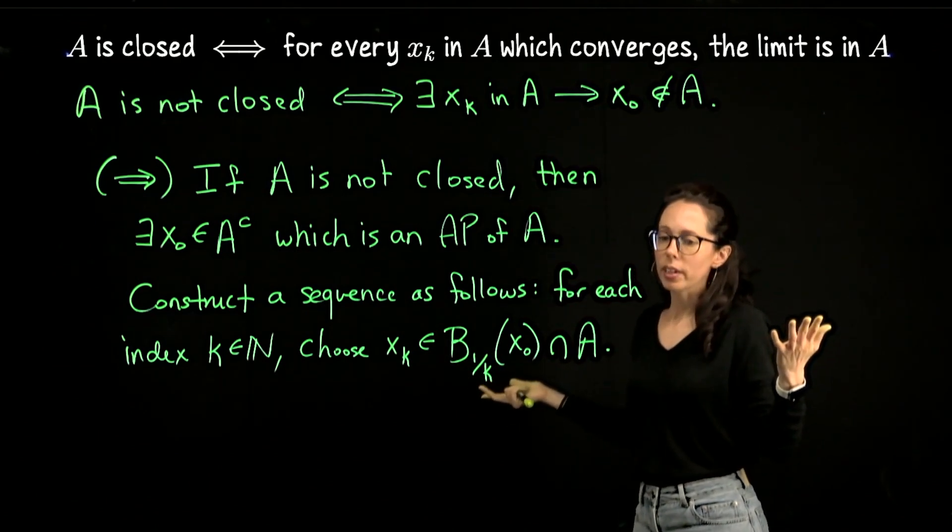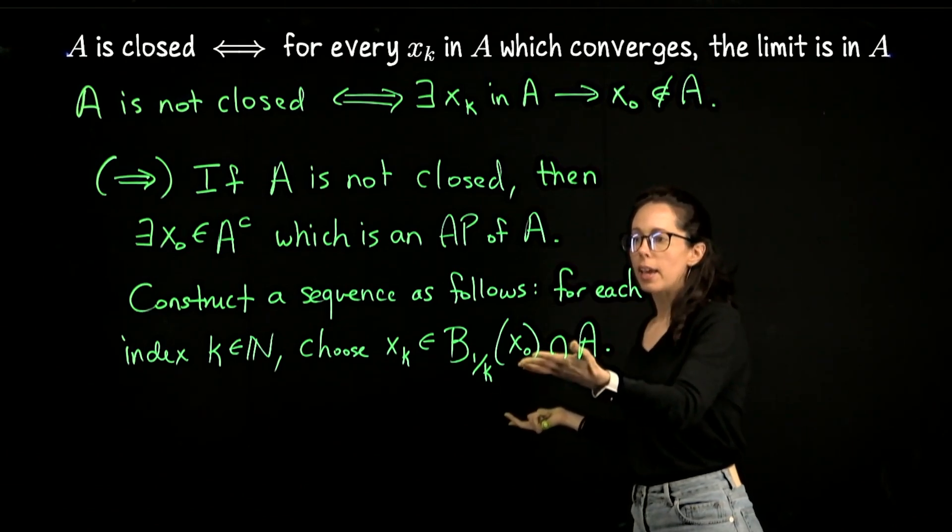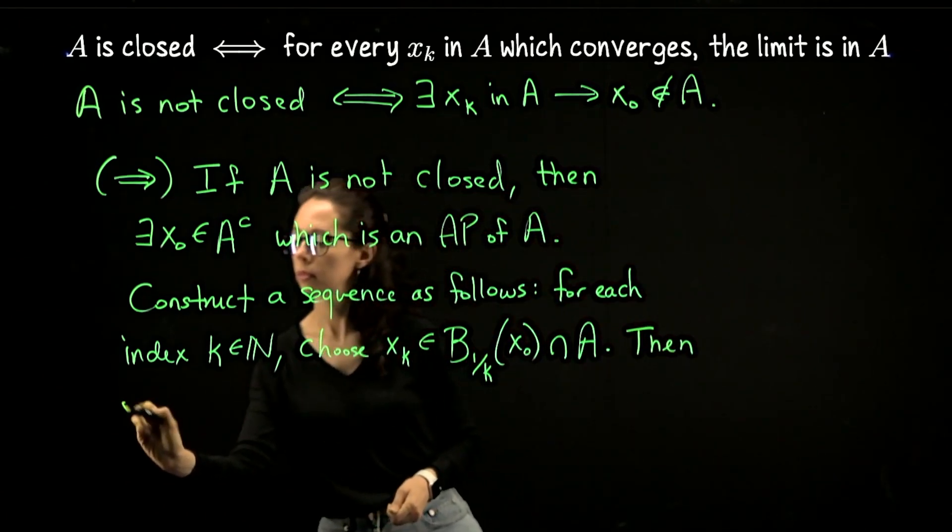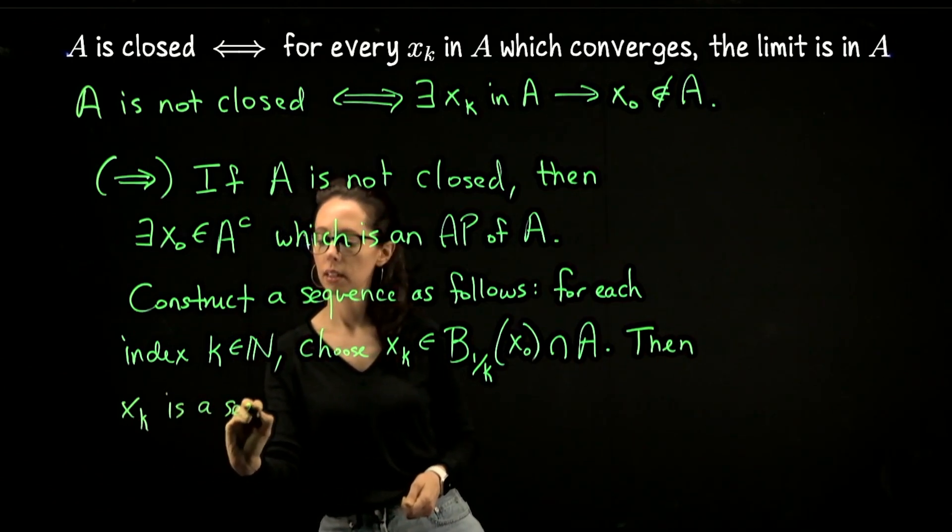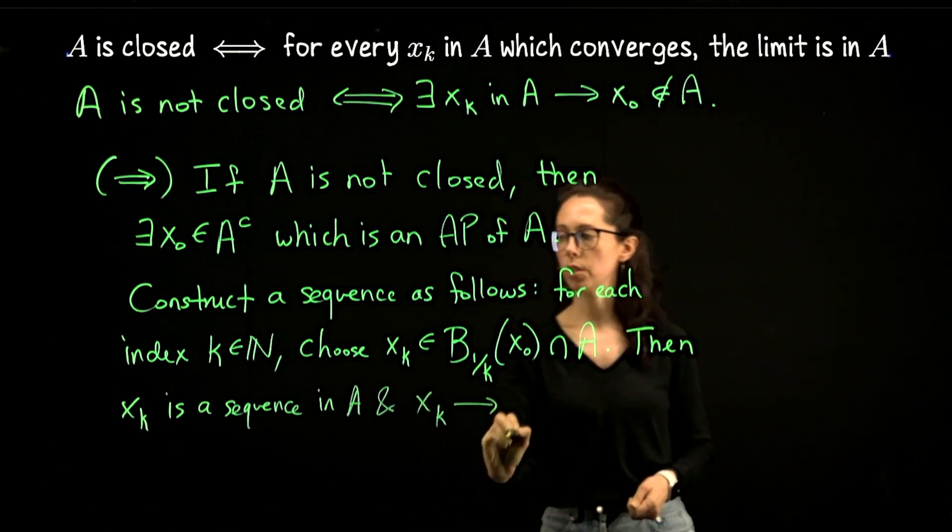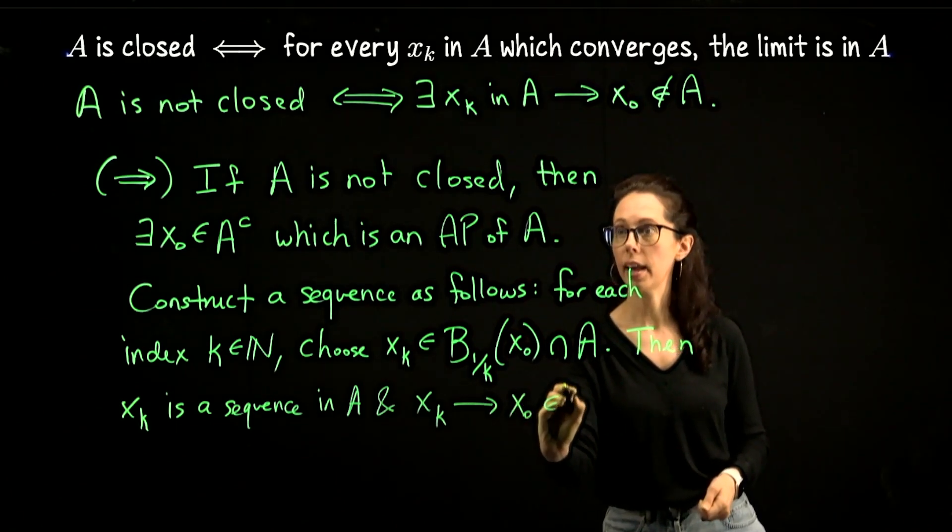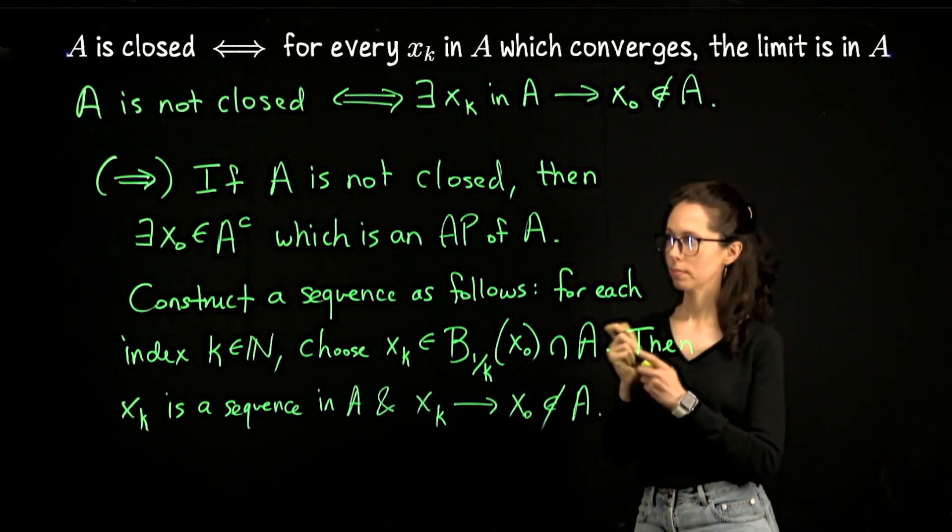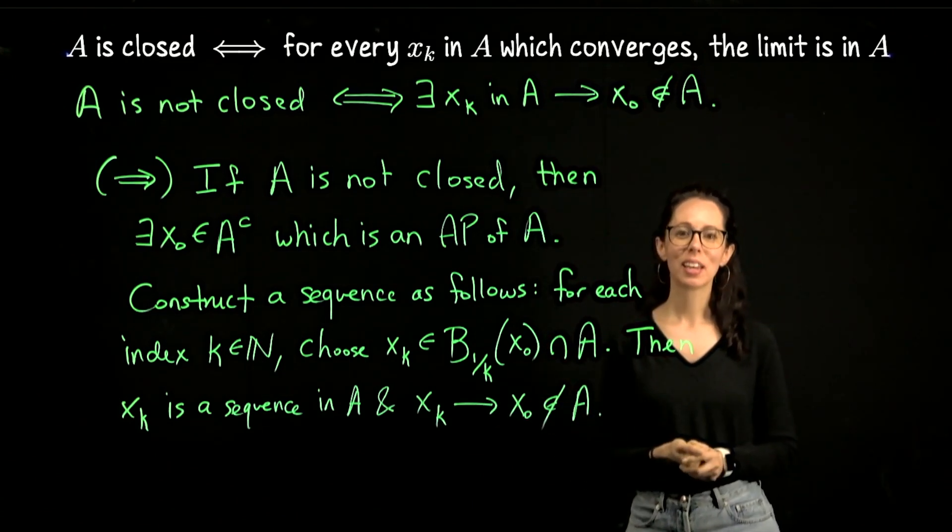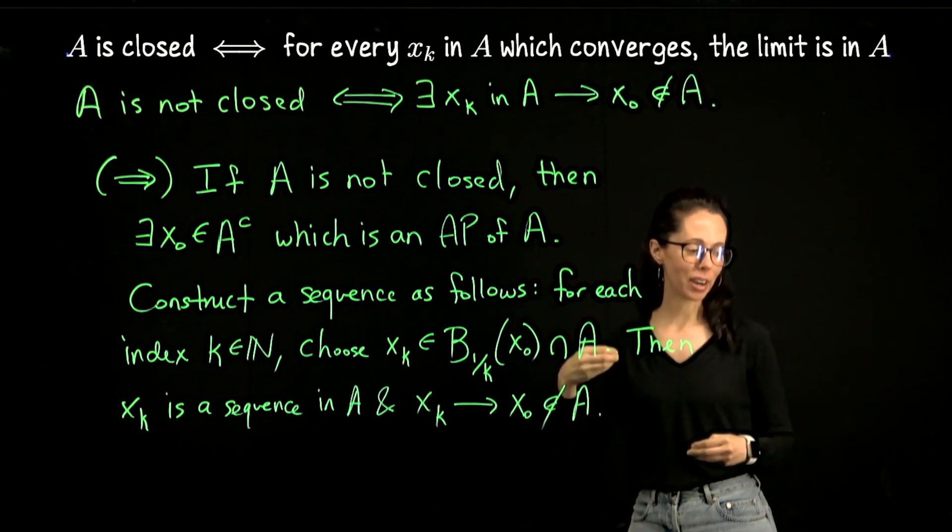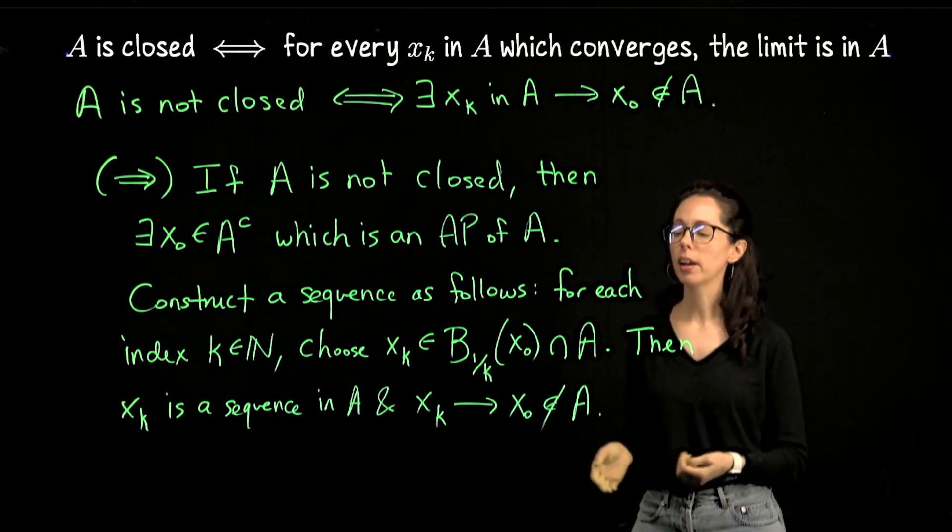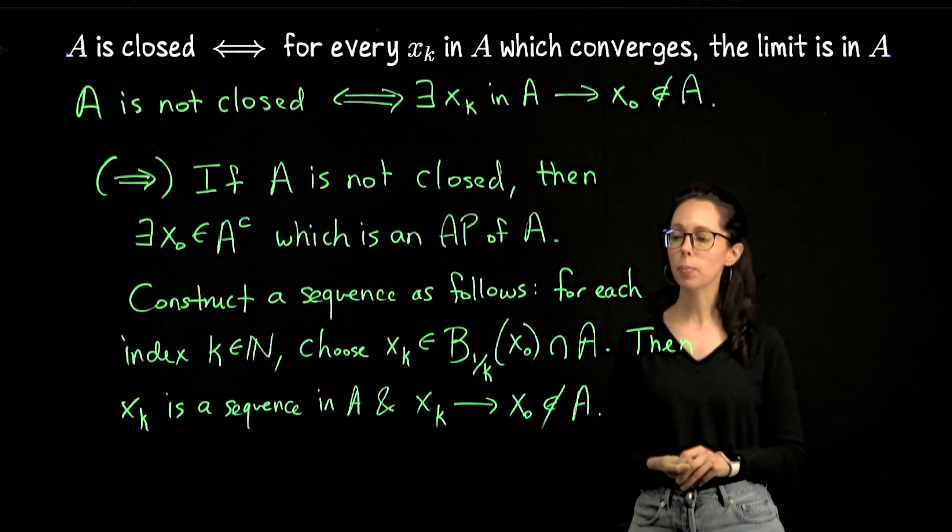And we're basically done now. I don't know if I want to leave the reader to finish it. But now x_k is a sequence in A because we picked the terms to come from A. So then x_k is a sequence in A and x_k tends to x₀, which is not in A. And that's exactly what we wanted for this direction. Okay. I really like this. I like it when I can construct a sequence.